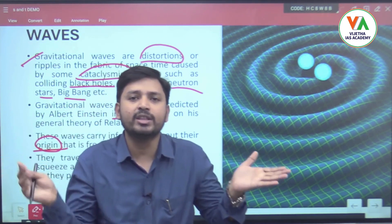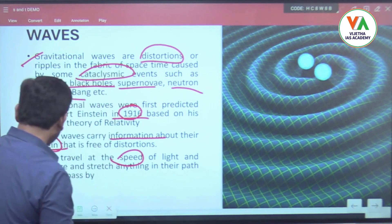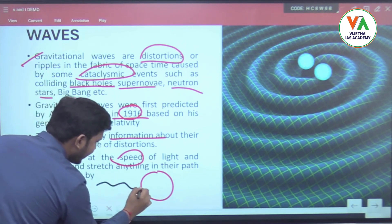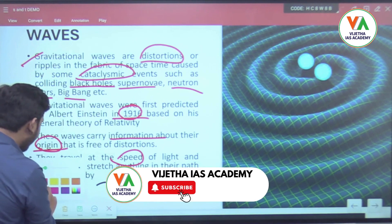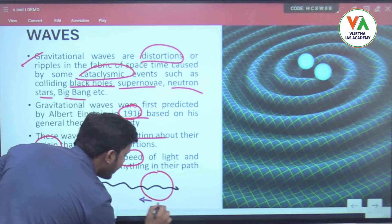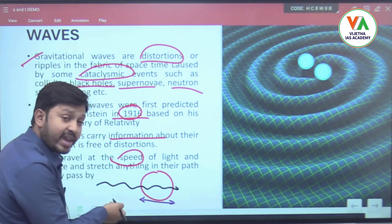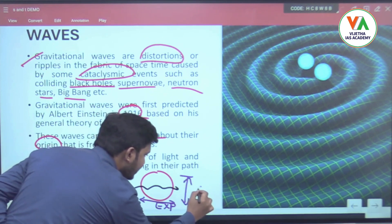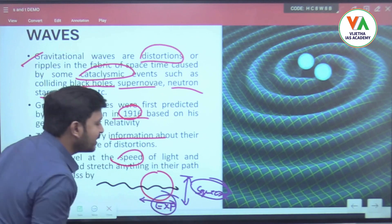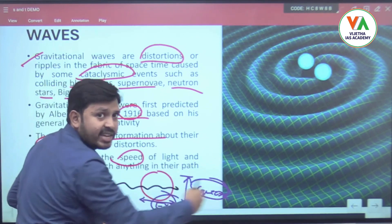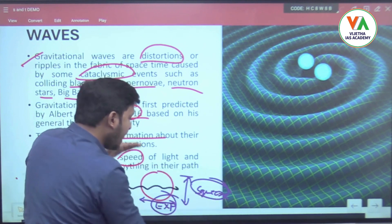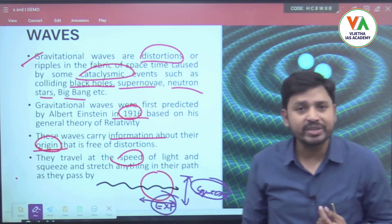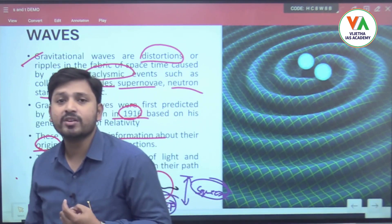For example, if gravitational waves are traveling through the Earth, they will try to expand the Earth in one direction and squeeze or contract it in the perpendicular direction. Based on this expansion and squeezing, we can determine in which direction the gravitational waves are traveling and whether they are present at all.